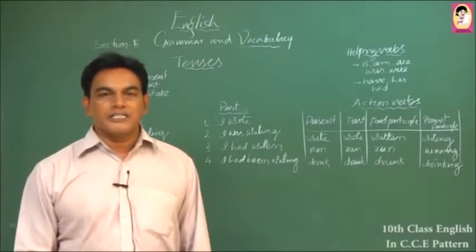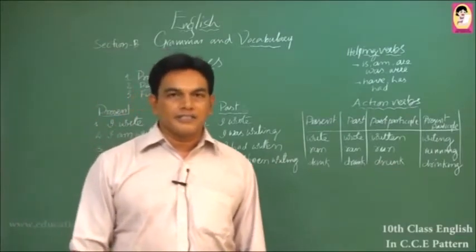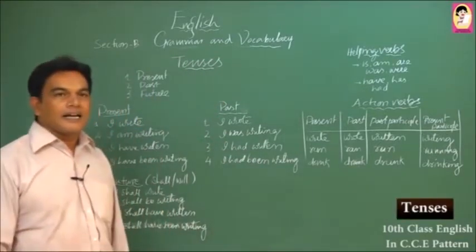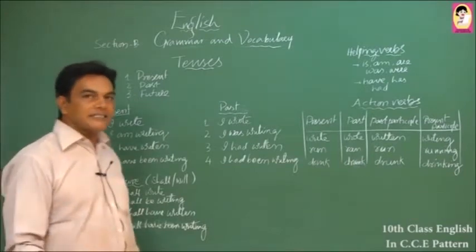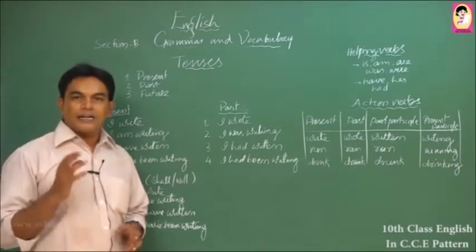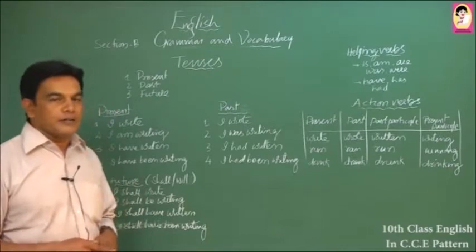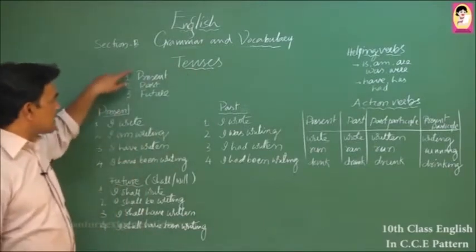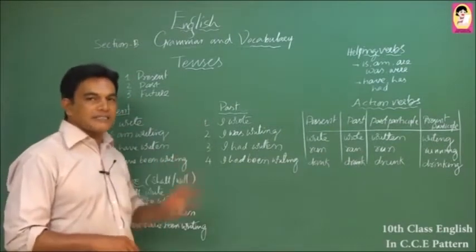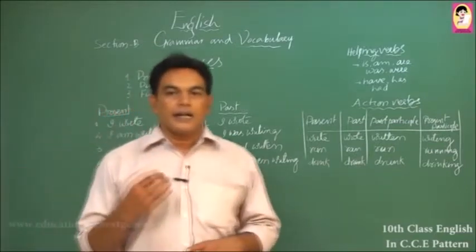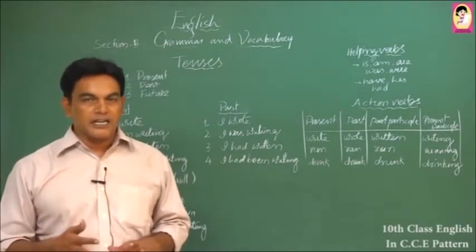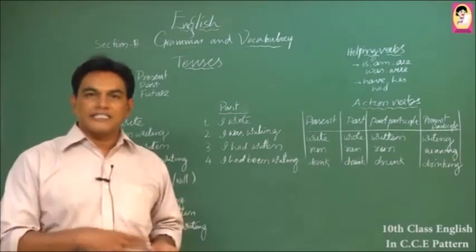Good morning everybody, welcome to Education for Next Generation. This is Joseph, and in this video we'll be discussing tenses. Tense means time. There are three major tenses in English, and each has four aspects, giving us twelve tenses in total. The four aspects are: simple, continuous, perfect, and perfect continuous.